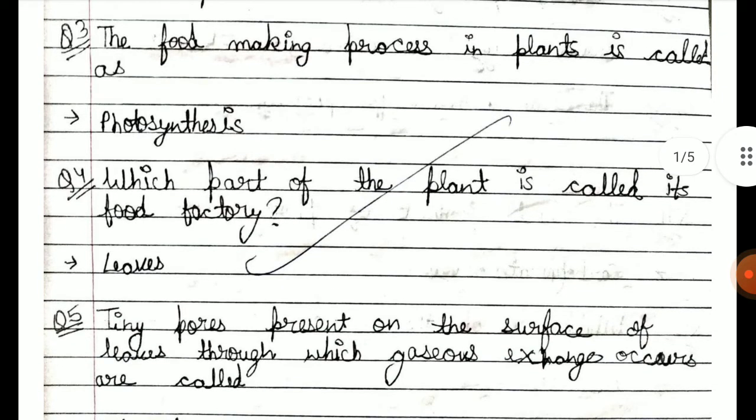Which part of the plant is called its food factory? We call leaves the food factory of the plant, because leaves are where food is made.